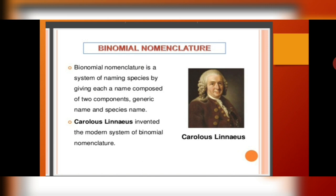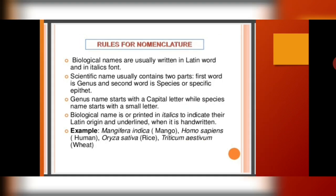What do we mean by binomial nomenclature? Binomial means anything that has two terms. Binomial nomenclature is a system of naming species by giving each a name composed of two components: the generic name or genus name, and the specific epithet or species name. This system of nomenclature was given by Sir Carolus Linnaeus, who basically invented this system.